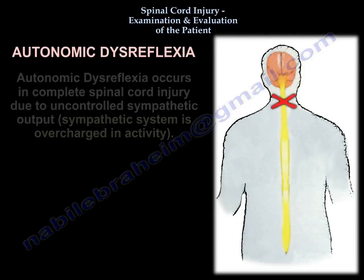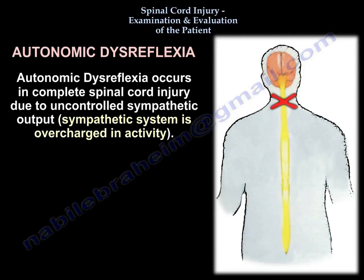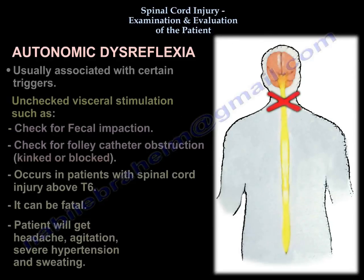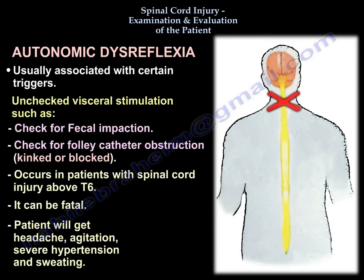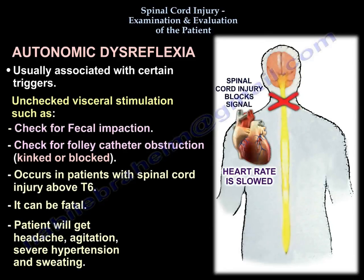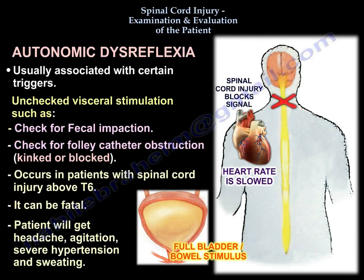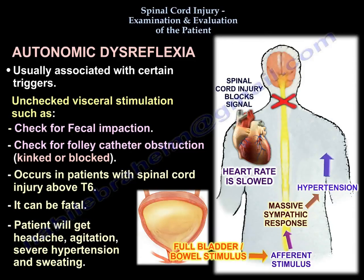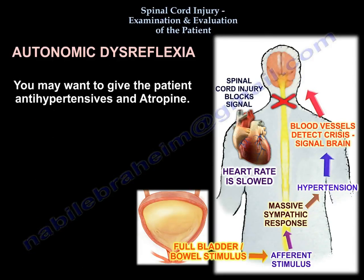Autonomic dysreflexia occurs in complete spinal cord injury due to uncontrolled sympathetic output — the sympathetic system is overactive. It is usually triggered by unchecked visceral stimulation, such as fecal impaction or a kinked or blocked Foley catheter. It occurs in patients with spinal cord injury above T6 and can be fatal. Symptoms include headache, agitation, severe hypertension, and sweating. Check for fecal impaction and inspect the Foley catheter. You may need to give antihypertensives and atropine.